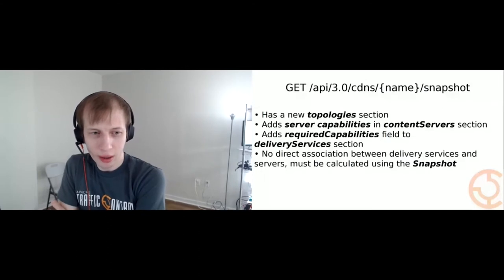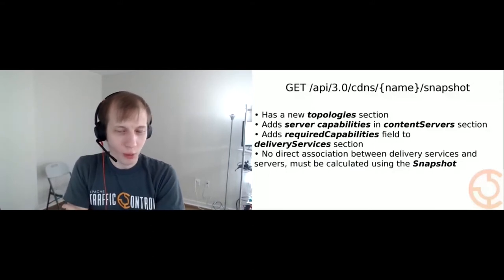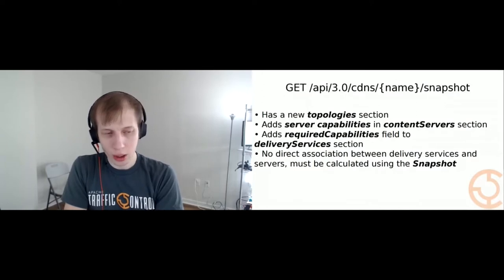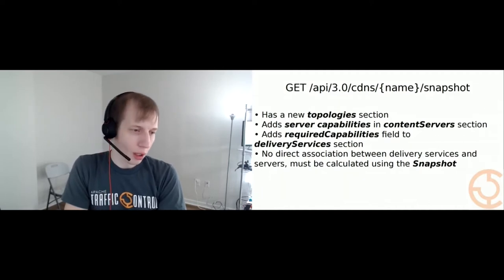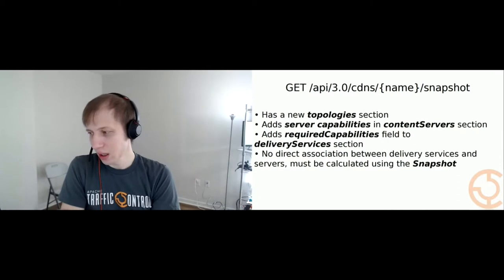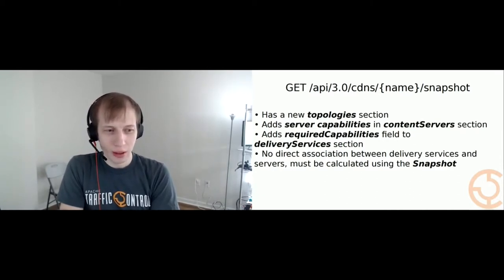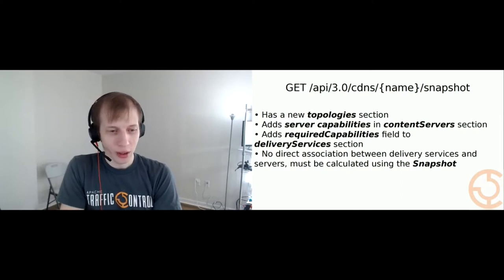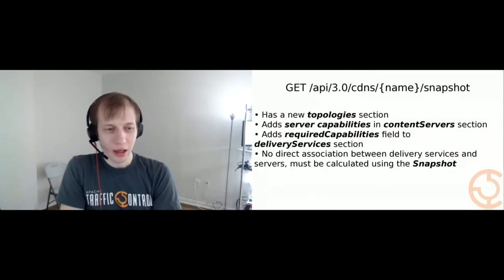Next, let's talk about snapshots. When I say snapshot, I mean the traffic router config — what Traffic Monitor gets and what Traffic Router looks for in order to know which servers are involved in which delivery service. We got a new topology section. Previously, the content service section did not say anything about server capabilities. Now, it does. Using that information, you're able to calculate which servers are associated with which delivery services.